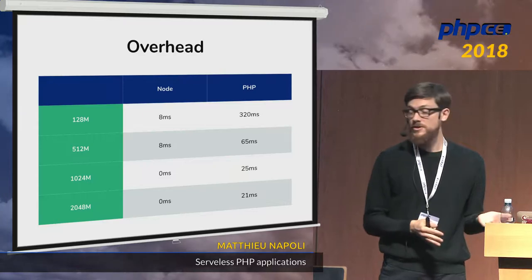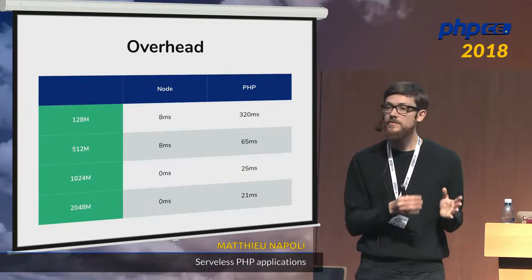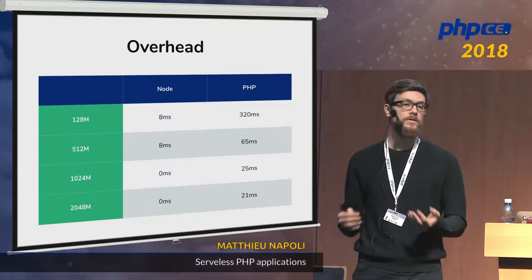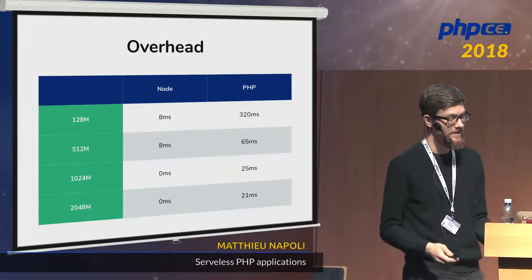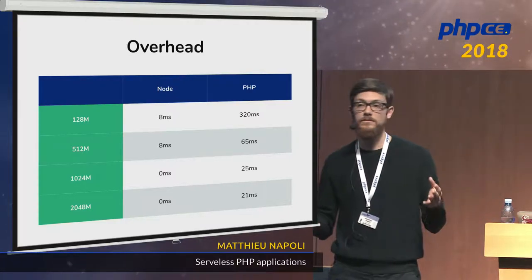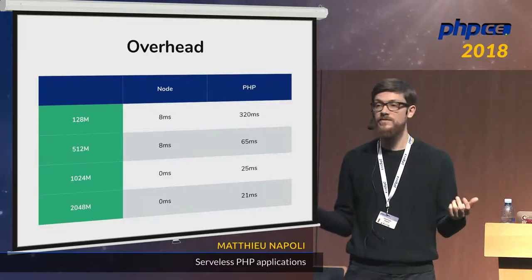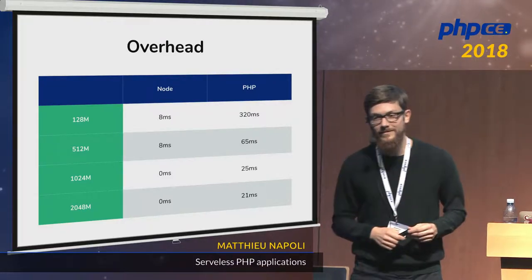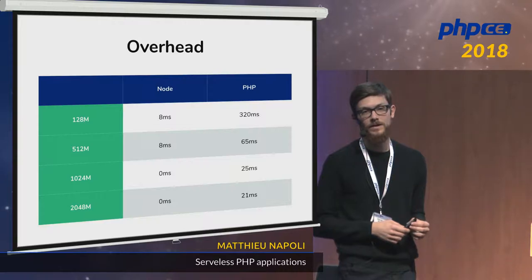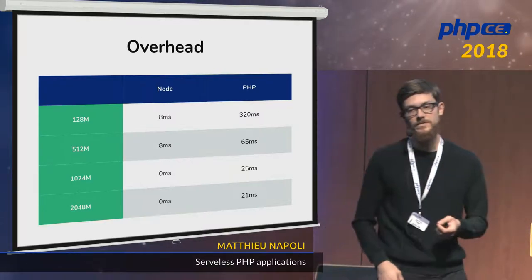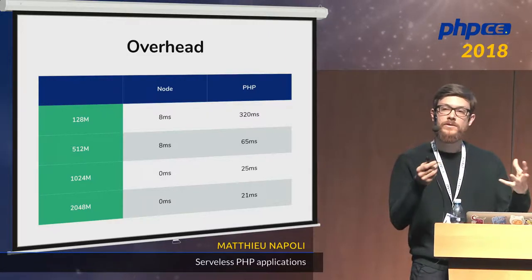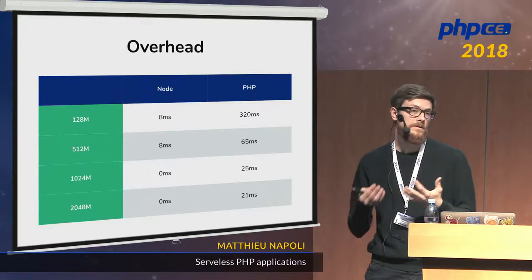For some applications — if your application takes 5 or 20 milliseconds to respond — this is not good and it won't work. But my conclusion is that for maybe 80% of all applications out there, this is fine. We can run PHP on Lambda — we just have to accept that it will run a bit slower.